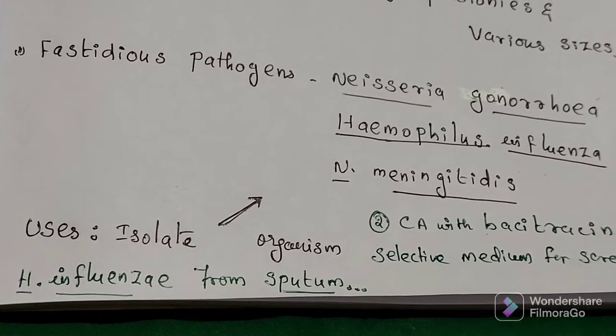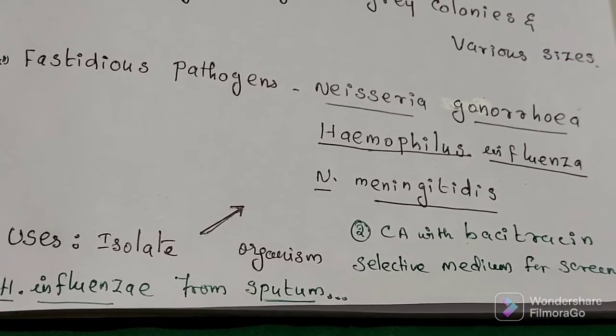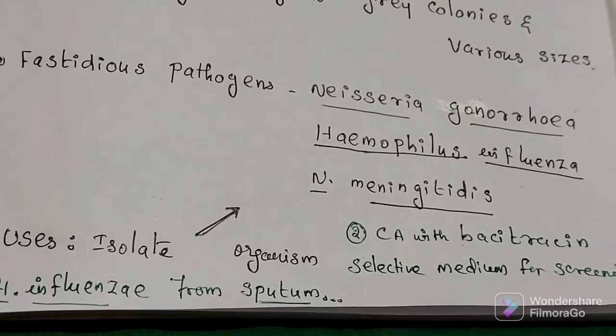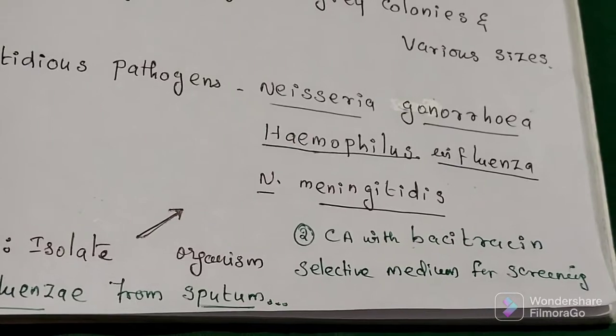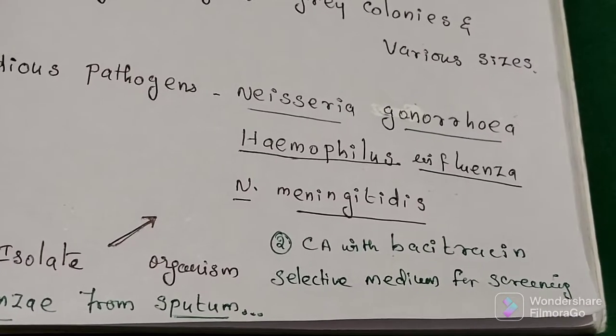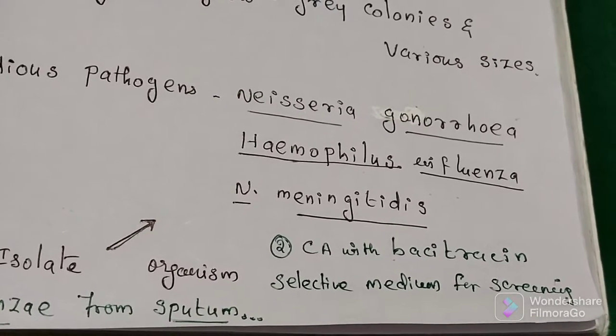From specimens, example sputum containing a mixed flora of microorganisms. From chocolate agar with that antibiotic bacitracin, a selective medium for screening Haemophilus influenzae from sputum sample.